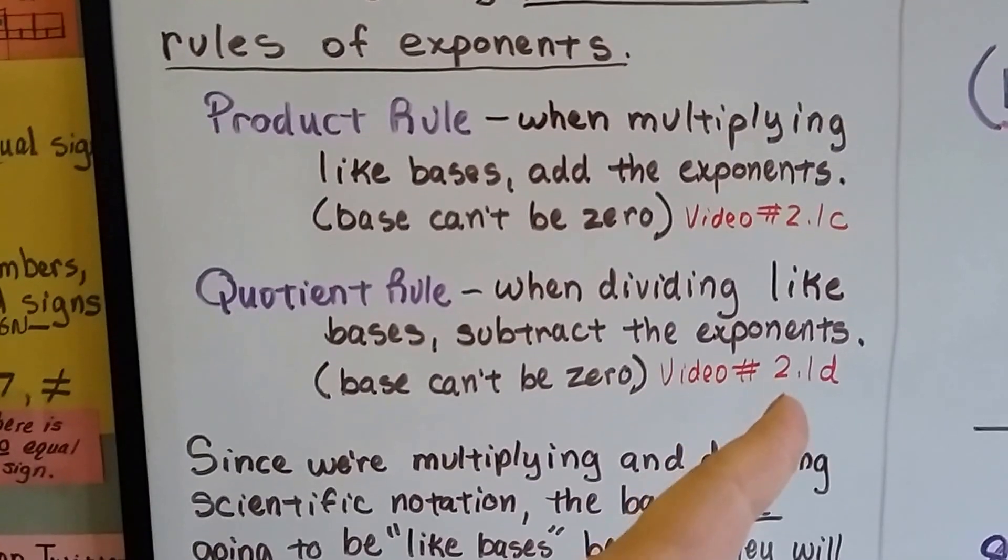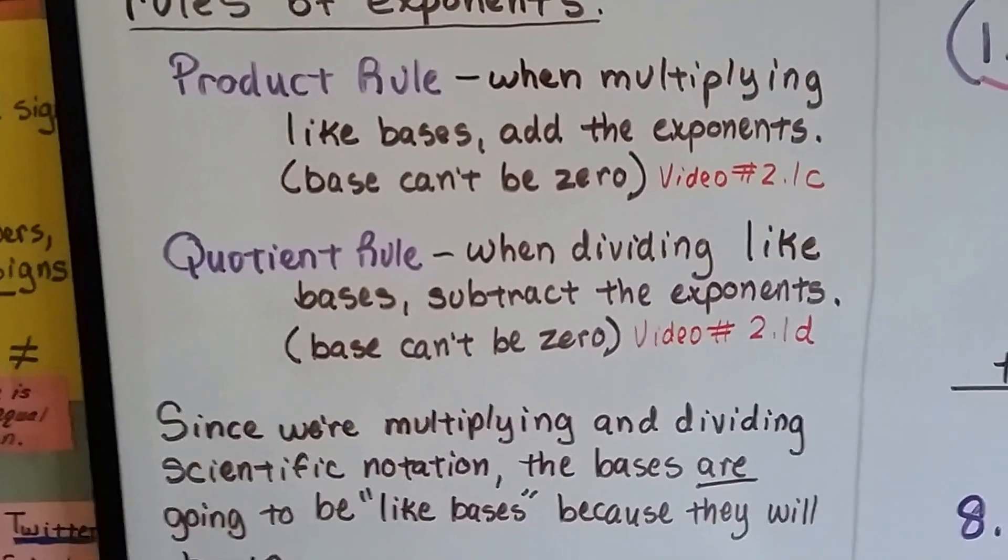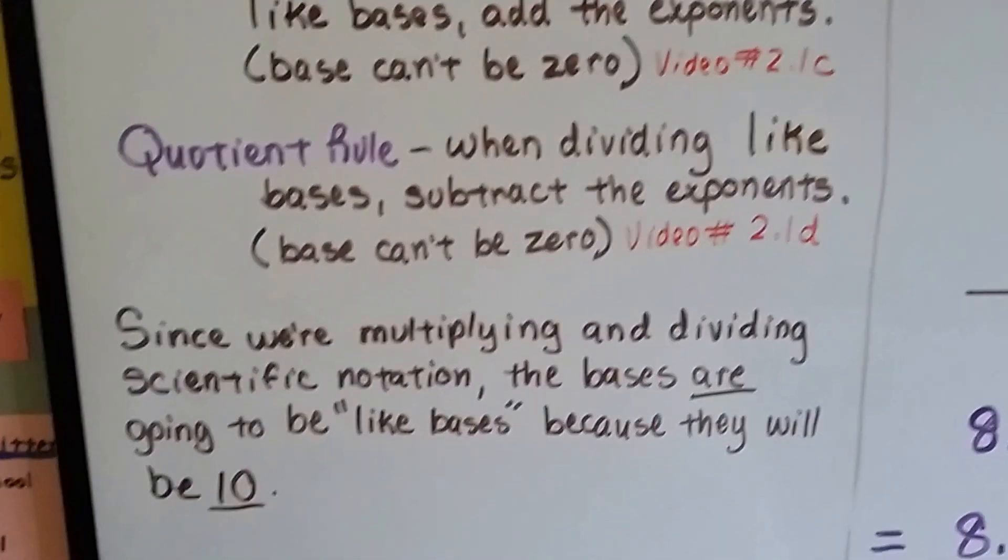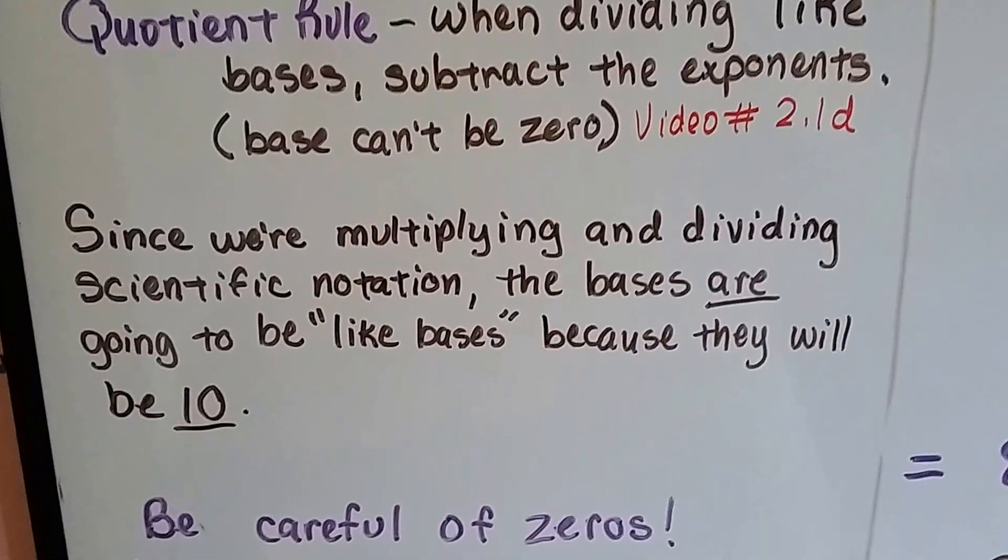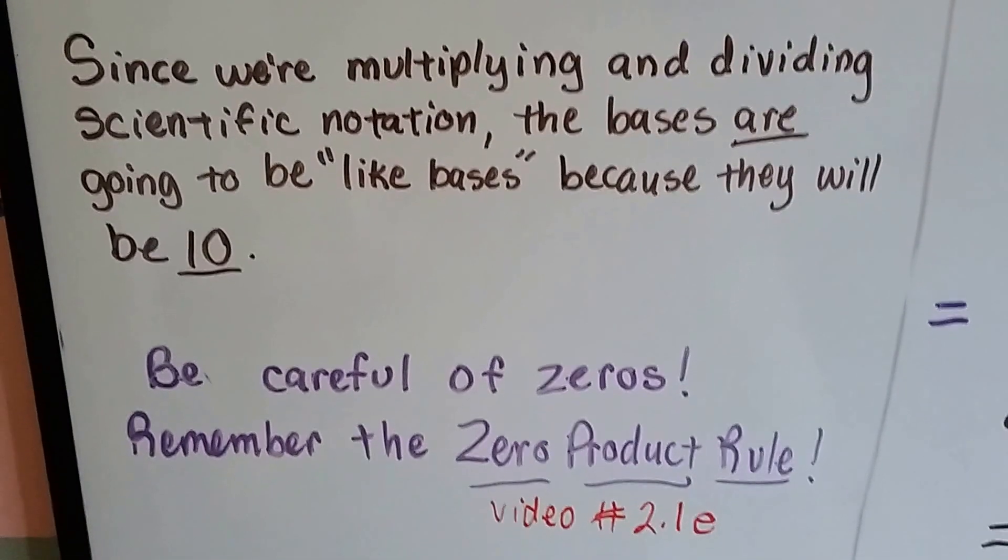And in video 2.1d, we learned about the quotient rule. It says when dividing like bases, we subtract the exponents. Well, since we're multiplying and dividing scientific notation, the bases are going to be like bases because they're all going to be 10. But be careful of zeros.